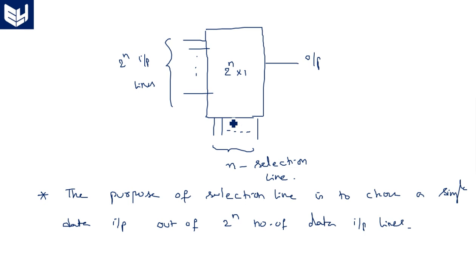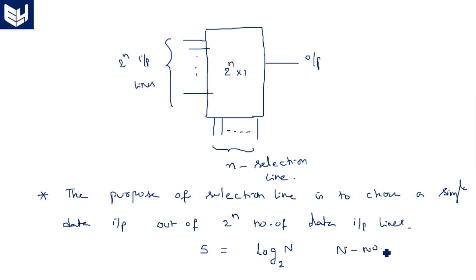The relation between the selection lines and the input lines is given by the formula: n = log N base 2, where capital N is the number of inputs. So 2 power n (small n) equals capital N, meaning the number of selection lines is log N base 2.